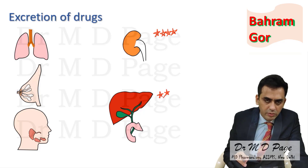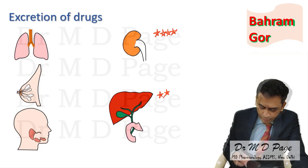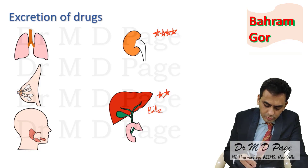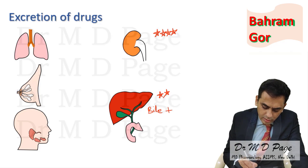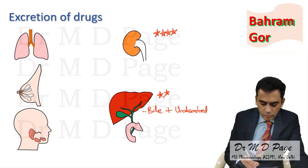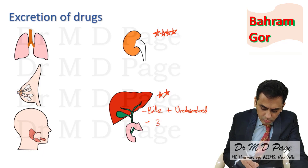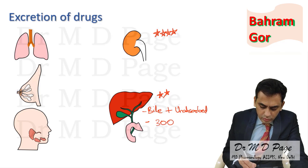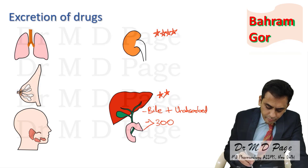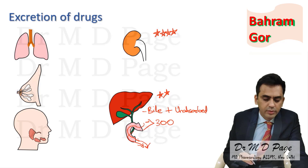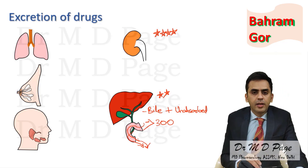There are also various other organs by which drugs get excreted. This includes the drug coming via secretion into bile, as well as the drug which is unabsorbed — both of these can get excreted via bile. Usually, larger molecules of drugs are excreted via this route; for example, those with a molecular weight of more than 300.